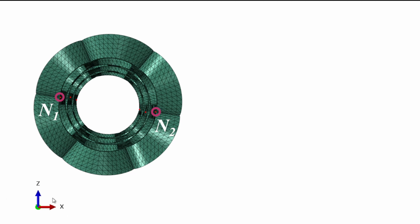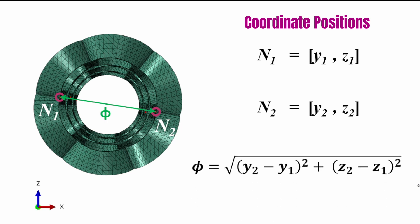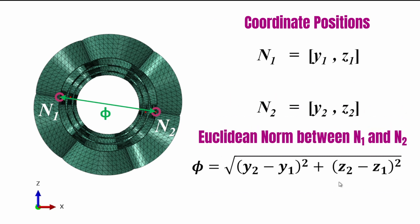This is in the XZ view of the specimen. The distance between those two nodes will form the diameter of the stent. We note the coordinate positions for those two nodes, and using those coordinate positions, we calculate the diameter phi using the Euclidean norm formula.